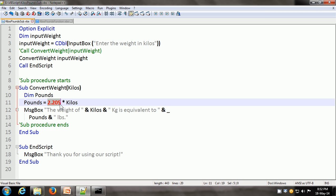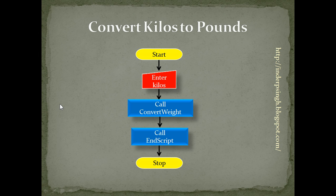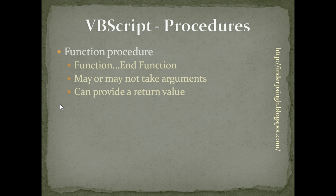Now let us go back and see what is the function procedure, which is the second kind of procedure in VBScript. A function procedure starts with the Function statement followed by the name of the procedure and ends with the End Function statement. As with sub-procedure, it may or may not take arguments. The difference between sub-procedure and function procedure is that the function procedure can provide a return value. So just as we can use the built-in functions of VBScript, we can create our own function procedures and use them just as we use the built-in functions. Since the function can provide a return value, it can be called within a statement.